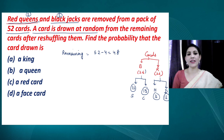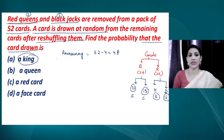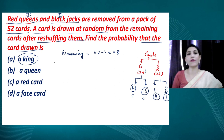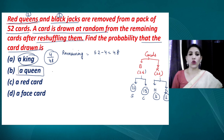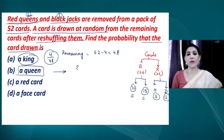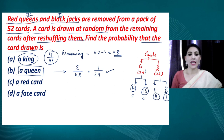A card is drawn at random from these remaining 48 cards after reshuffling. Find the probability that the card drawn is a king. Since no king was removed, all 4 kings are still present. The probability will be 4 divided by 48, which simplifies to 1/12. For finding the probability of getting a queen: out of 4 queens, 2 red queens were already removed, so only 2 queens remain. The probability is 2/48, which simplifies to 1/24.